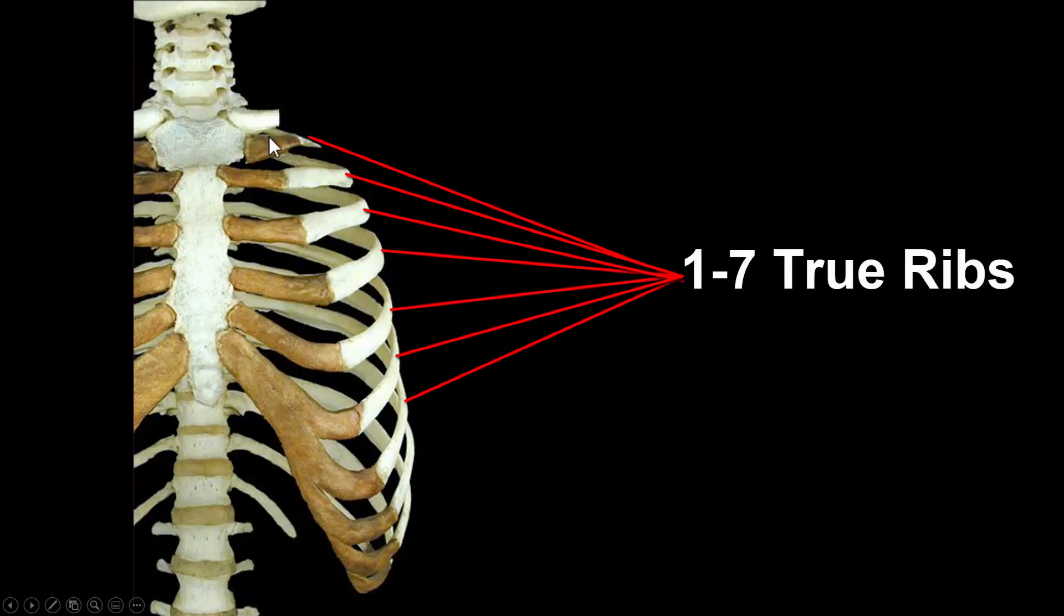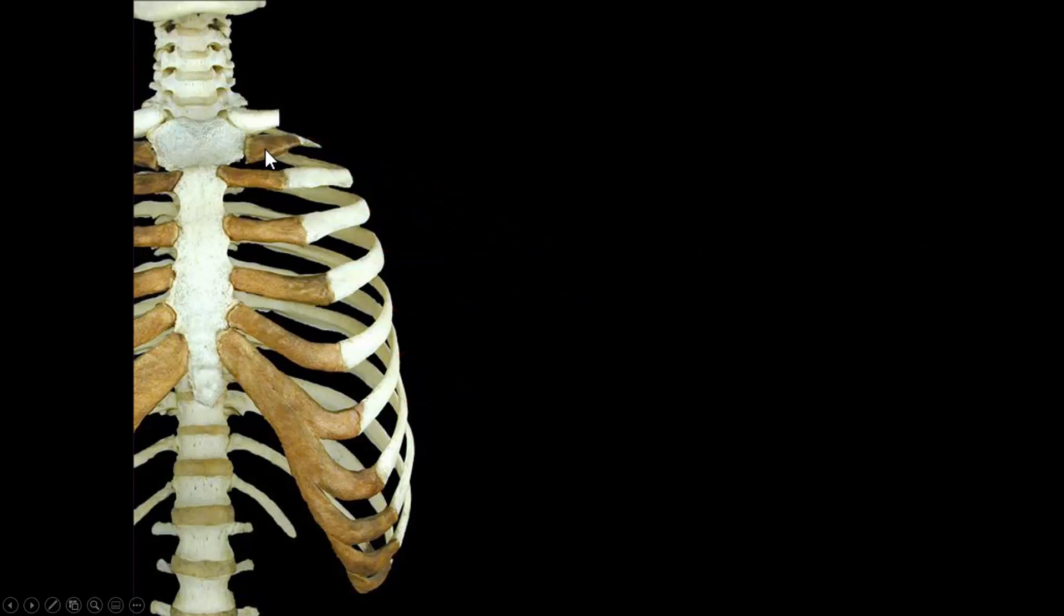Ribs 1 through 7 are called true ribs, and they have individual costal cartilage that attaches directly to the sternum.